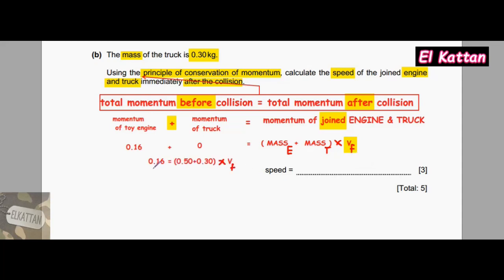0.16 equals, in brackets, the mass of the engine which is 0.50 plus the mass of the truck which is 0.30, times the final velocity VF. 0.16 equals 0.80 times the final velocity VF. Finally, we divide both sides by 0.80.